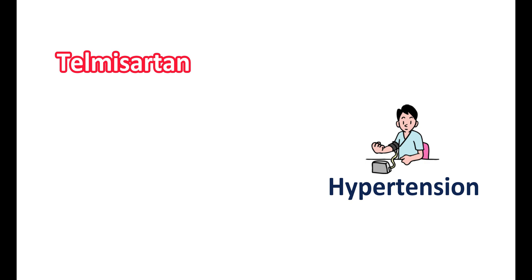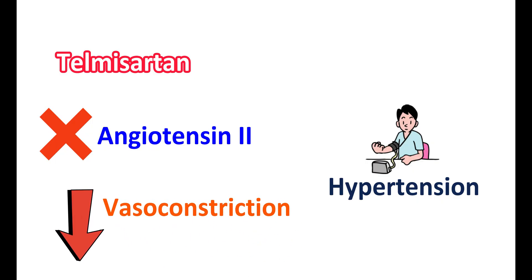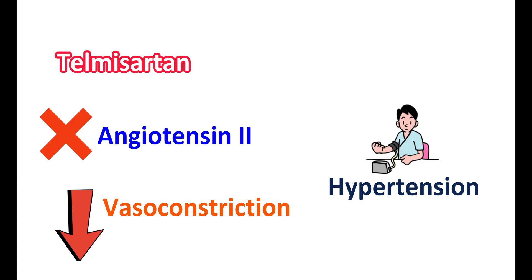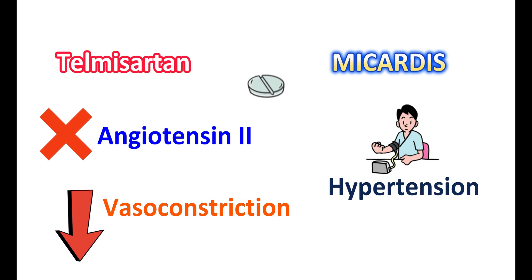This medication can reduce the activity of angiotensin-2, therefore it can reduce the vasoconstriction produced by this mediator. This reduces the blood pressure, thereby improving the symptoms of hypertension. Telmisartan is available as a tablet for treating hypertension and is well known by the brand name Micardis.